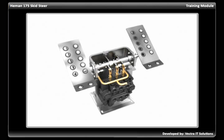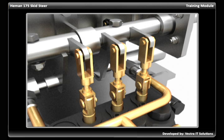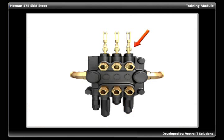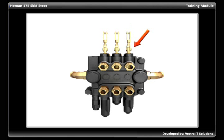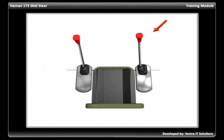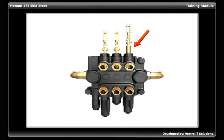Lifting the push from the pedal brings the spool to the center. The right spool is controlled by the right control lever. Pushing the control lever towards the right pushes the spool downwards, allowing the oil to escape from the upper port. Pulling the control lever towards the left pulls the spool upwards, allowing the oil to escape from the lower port.